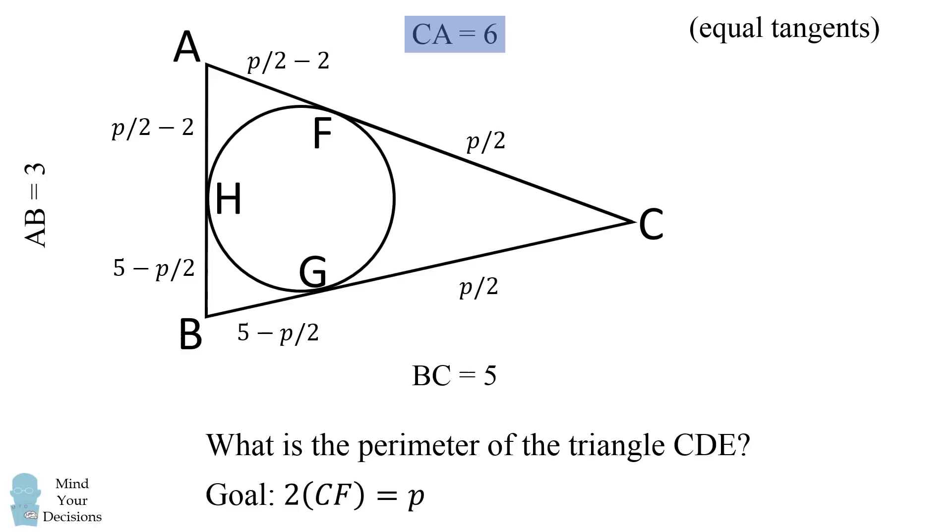Finally, we have that CA is equal to 6. But we have another expression for CA and that's equal to P over 2 minus 2 plus P over 2. So we can solve this equation that P is equal to 8 and that's exactly the perimeter of triangle CD. By walking around this triangle using the principle of equal tangents, we figured out the perimeter of triangle CD. Did you figure it out?